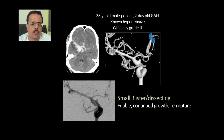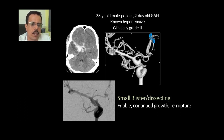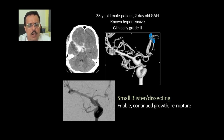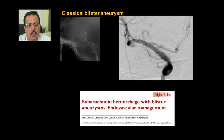Now we come to blister aneurysms. These are very tricky — they are very friable, can continue to grow, and can re-rupture easily. A 38-year-old male with massive subarachnoid hemorrhage had a classical blister aneurysm in the supraclinoid internal carotid artery, shown in the 3D and 2D images. We placed two overlapping stents with no coils, and on follow-up there was complete resolution of the blister aneurysm. We have one of the largest series published in Neurology India on endovascular management of blister aneurysms.